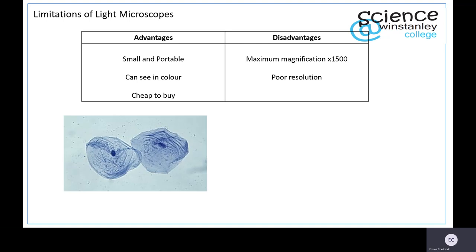To highlight this, here is an animal cell. This is a human cheek cell seen under the light microscope. It has been stained with a blue dye and because you can see in color you can see this. However, the only objects you can really make out are the nucleus and the cell membrane.